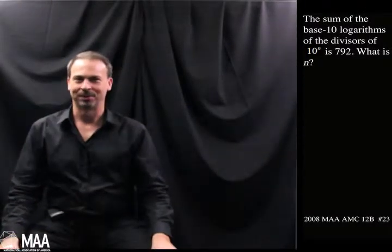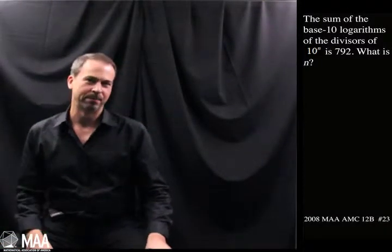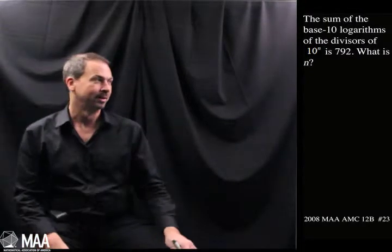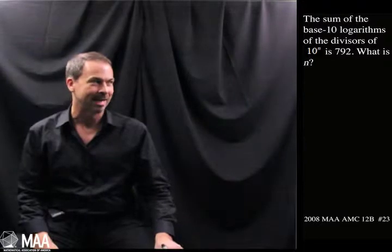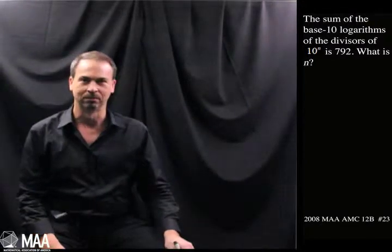G'day! Welcome to another Curriculum Burst. Let's do an interesting counting problem from grade 12. It goes as follows: The sum of the base 10 logarithms of the divisors of 10 to the n is 792. What's n?